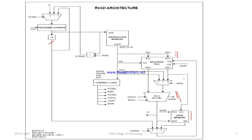Let us see the purpose of this MUX. In the case of an R-type instruction, we need to operate on two register operands stored in the register file, so the register 2 output will be selected and given to the ALU unit. In the case of an immediate type instruction or a load instruction, the immediate line will be selected and given to the ALU unit.